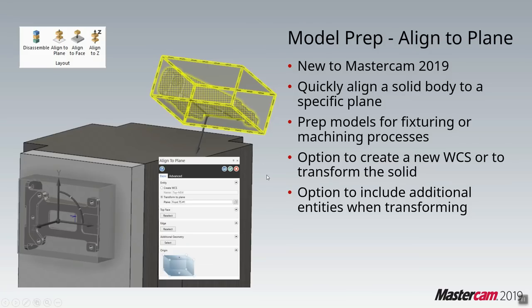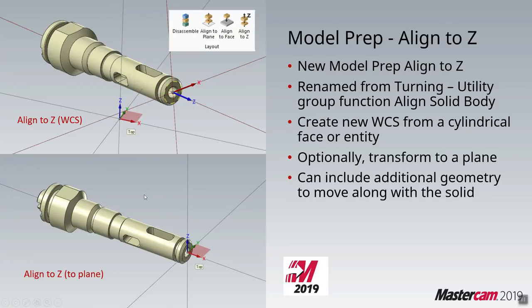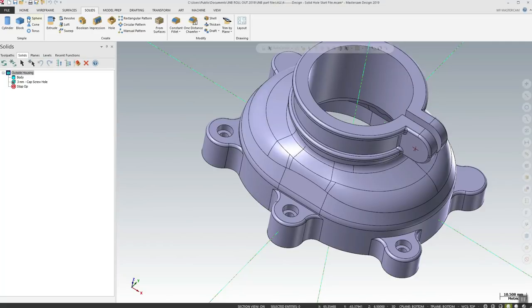When looking at planes, you also have the ability to align a part to a plane using model prep, which now incorporates align to plane, align to face, and align to Z functions all within the model prep. We can see how faces are aligned and then adjusted. Model prep now includes align to Z — it's no longer just something found within the lathe setup.